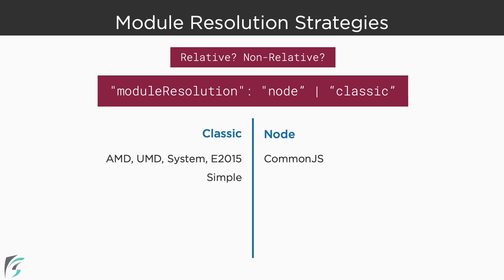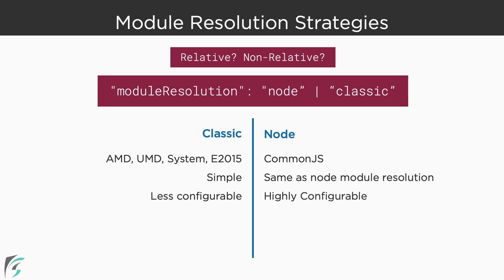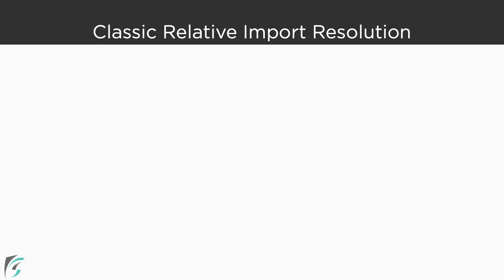The process of resolving modules in classic mode is very simple. If the mode is node, it works the same way Node.js attempts to resolve modules. Though it is not complex, it is certainly different from classic mode. Classic mode is less configurable, whereas we can configure the node strategy using the package.json file if it is present. Let us now look at examples of how each of these strategies would attempt to resolve both relative and non-relative references.